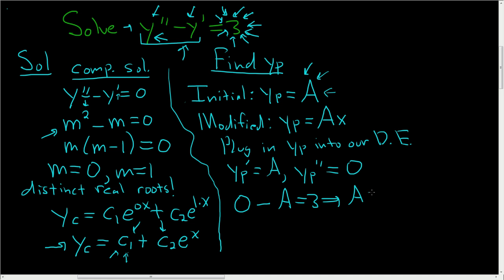Well, that means that a is negative 3. So our y sub p, well, y sub p, it's right here. So it's going to be negative 3x. So negative 3x.